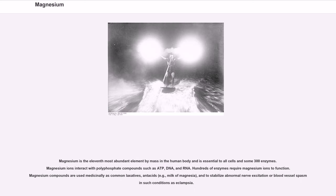Magnesium is the eleventh most abundant element by mass in the human body and is essential to all cells and some 300 enzymes. Magnesium ions interact with polyphosphate compounds such as ATP, DNA, and RNA. Hundreds of enzymes require magnesium ions to function. Magnesium compounds are used medicinally as common laxatives, antacids — for example, milk of magnesia — and to stabilize abnormal nerve excitation or blood vessel spasm in such conditions as eclampsia.